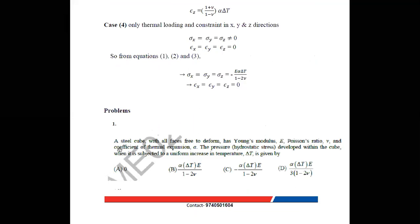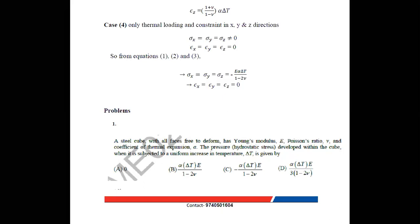Problem 1: A steel cube with all faces free to deform has Young's modulus E, Poisson's ratio nu, and coefficient of thermal expansion alpha. The pressure developed within the cube when subjected to a uniform temperature increase ΔT is asked. Since all faces are free to deform, strain in all directions is non-zero but stress in all directions is zero. The answer is zero (option A).